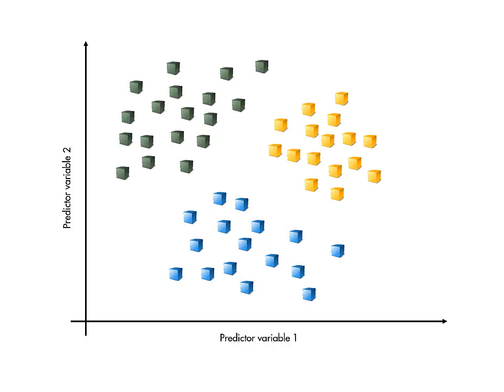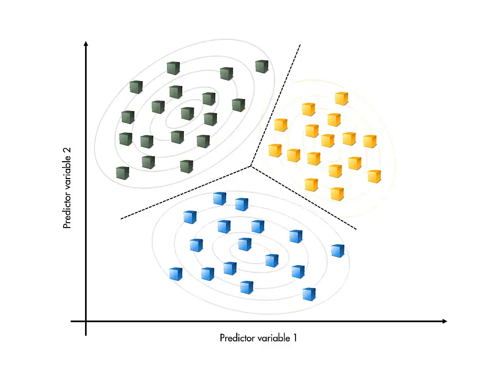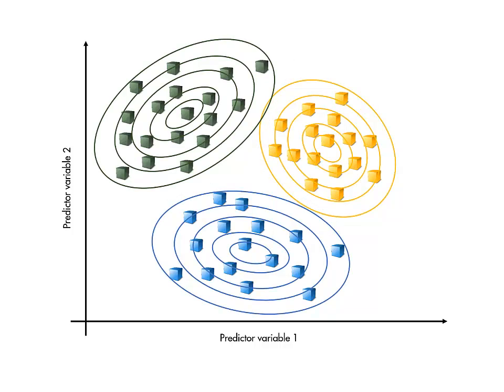Discriminant analysis uses the training observations to determine the location of a boundary between the response classes. The location of the boundary is determined by treating the observations of each class as samples from a multidimensional normal distribution.